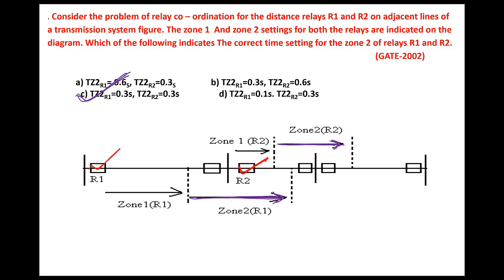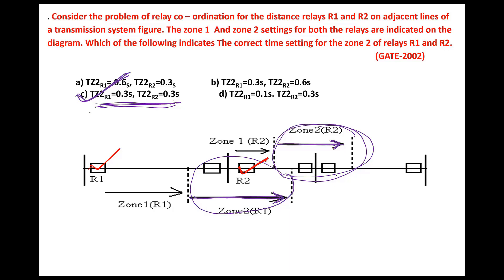Zone 2 region should have some time delay, and for relay R2 the zone 2 region should also have some time delay. Both time delays for zone 2 of relay R1 and R2 should be the same. If he had asked for zone 3 of relay R1 versus zone 2 of relay R2, there should be some discrimination and option A would have been right. Since he is asking zone 2 of R1 and R2, both should have the same time delay of 0.3 seconds.